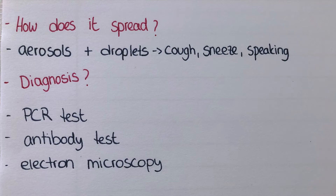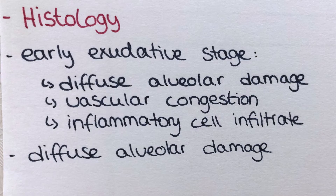SARS patients become infectious around the time when the first symptoms appear, which is usually the sudden onset of high fever. They are usually not infectious during the three to seven day incubation period before symptoms develop. Diagnosis uses a PCR test or an antibody test to prove the presence of the virus, and electron microscopy can be used to visualize the coronavirus in pneumocytes.